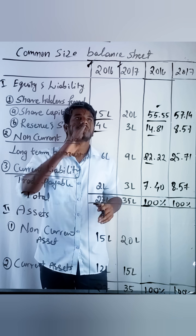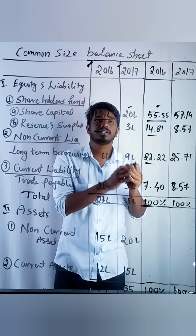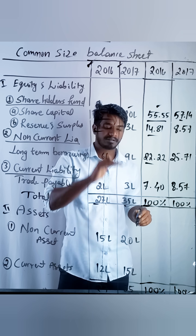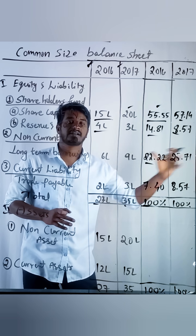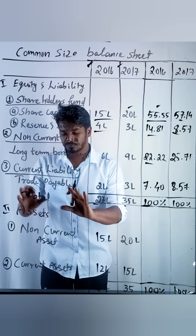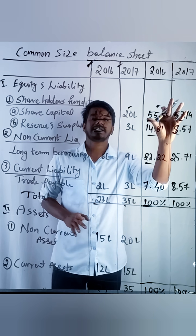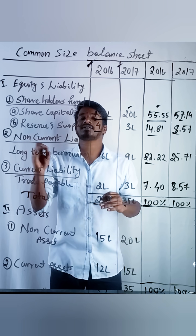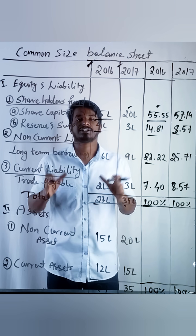For the next year: 20 divided by 35 into 100 is 57.14; 3 divided by 35 into 100 is 8.57. Likewise, we should do the same for assets also, then we will arrive at each item's percentage. This is how we prepare a common size balance sheet.